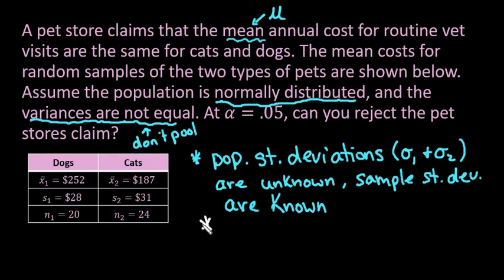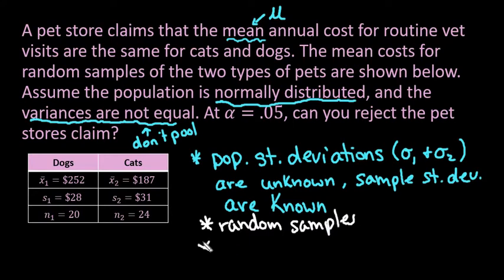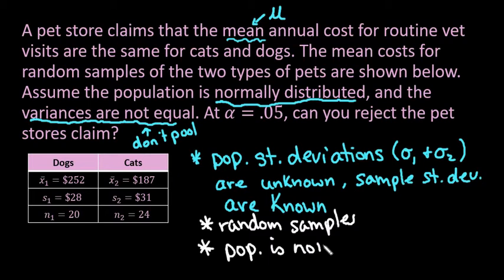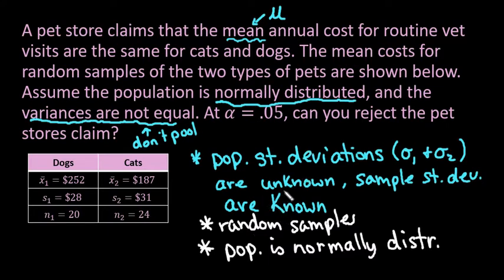The other requirement is that we have random samples. For the central limit theorem to apply, you either need a sample size greater than or equal to 30, or the population has to be normally distributed — and the problem says to assume the population is normally distributed. Note that conditions can vary between textbooks, so make sure to check your textbook and class for the specific conditions and assumptions required.